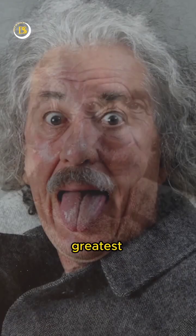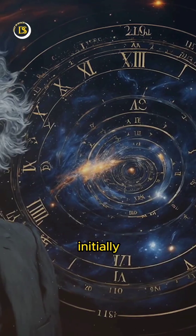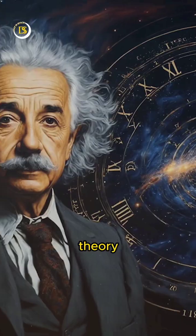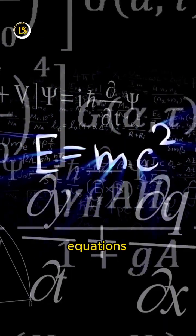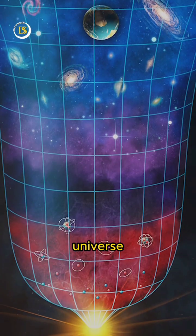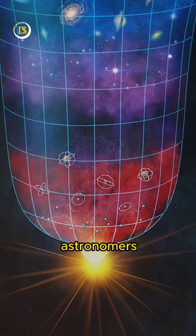Einstein considered this to be his greatest mistake in life. Initially, when Einstein formulated his theory of general relativity, his equations hinted at an expanding universe, a concept unknown to astronomers at that time.